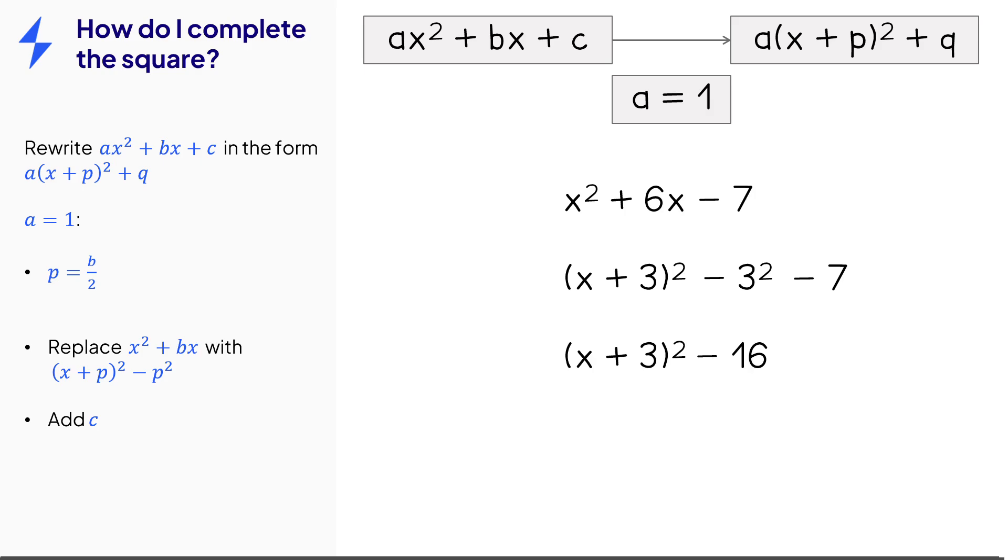We could quickly check if we made any silly mistakes by substituting a number into the first expression and the last expression. So if we chose x equals 1 we would get 0 from both expressions.